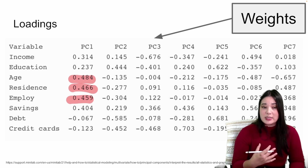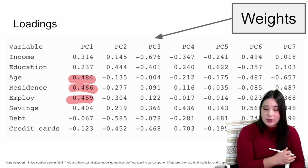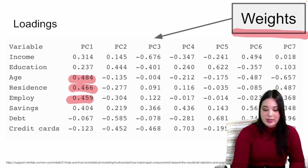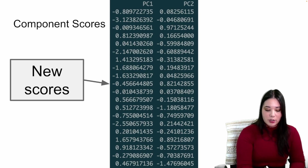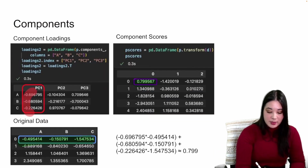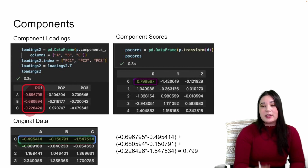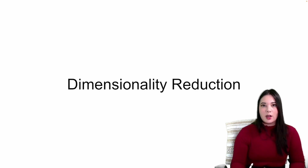For instance, looking at the first principal component, variables like age, residence, and employment are all strongly associated with it. Importantly, all principal components are combinations of all of the original variables. We often refer to these loadings as weights — they tell us how much of each original variable goes into each new principal component. After applying this transformation, we get our component scores: the values for each data point in the new set of variables.